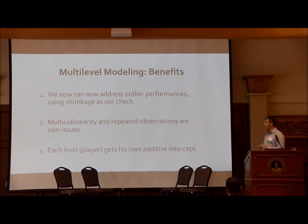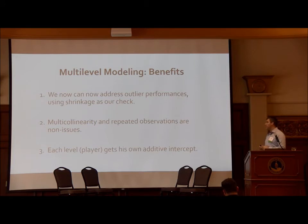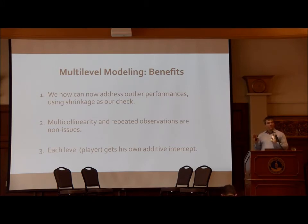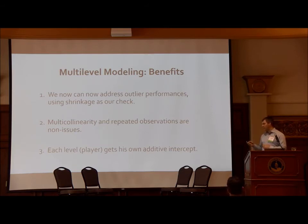The bottom line is that each player gets his own additive intercept, which makes the likelihood of a particular event more or less likely. A lot of regressions done in sports papers tend to control for external variables and then simply award whatever's left over to the player of interest — that's problematic. In baseball, we tend to give players their own coefficients so we have something we can assign to them specifically at the end of the day.